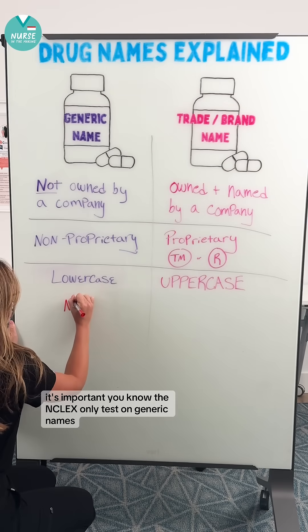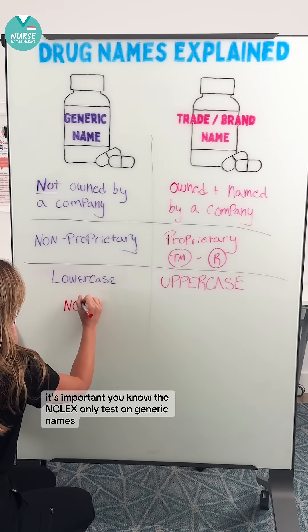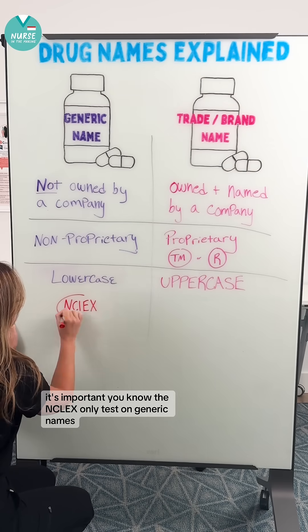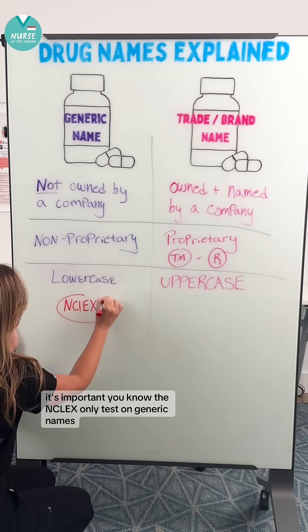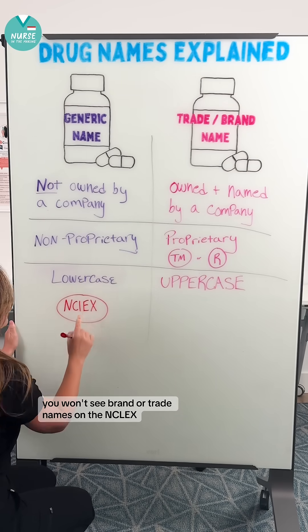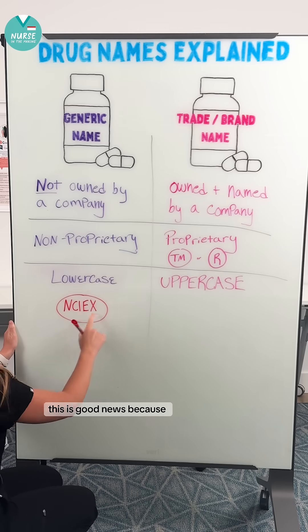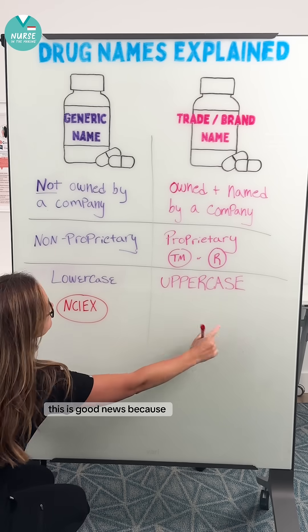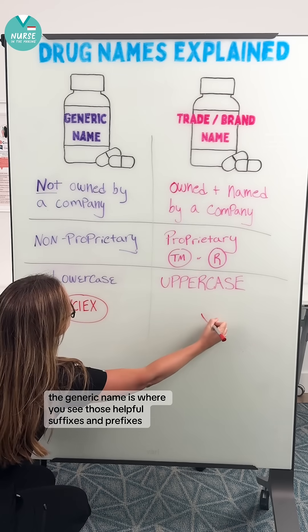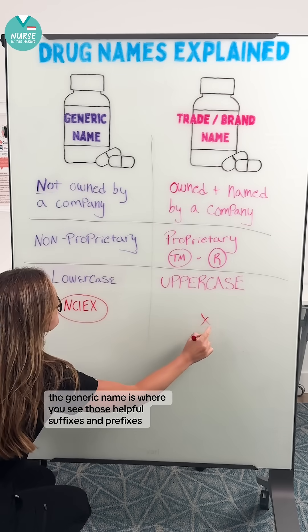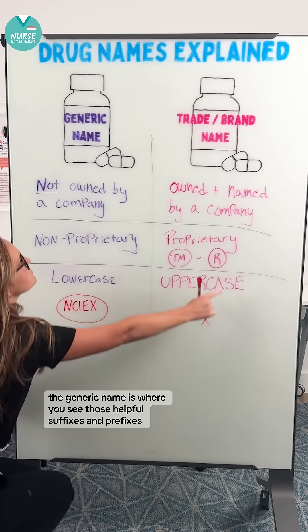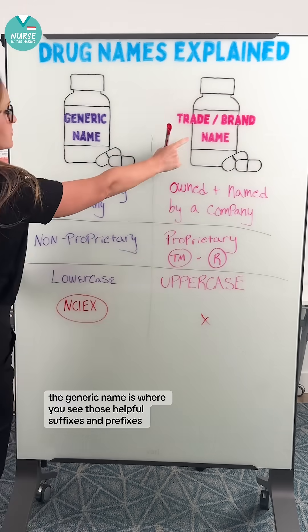It's important you know the NCLEX only tests on generic names — you won't see brand or trade names on the NCLEX. This is good news because the generic name is where you see those helpful suffixes and prefixes.